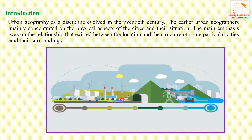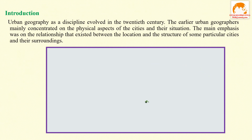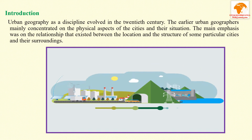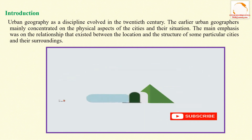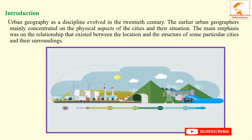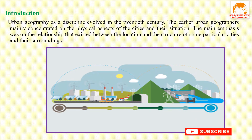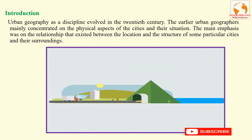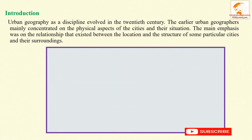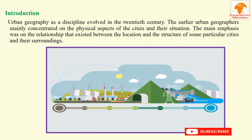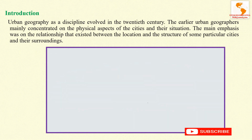Earlier urban geographers mainly concentrated on the physical aspects of cities and their situation. The main emphasis was on the relationship that existed between the location and the structure of particular cities and their surroundings.